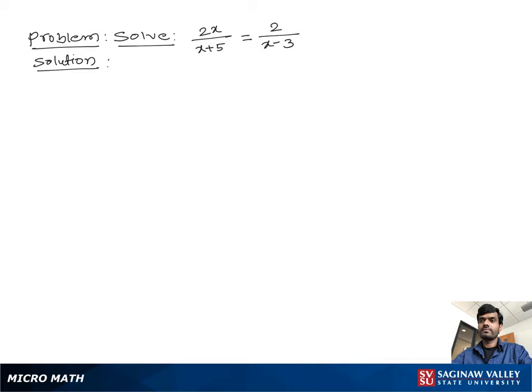Solve 2x over x plus 5 is equal to 2 over x minus 3. Let's write the problem again: 2x over x plus 5 is equal to 2 over x minus 3.